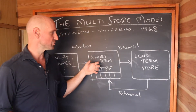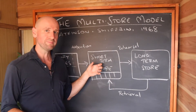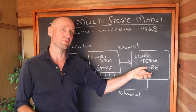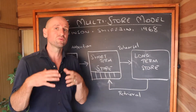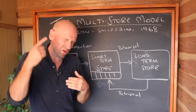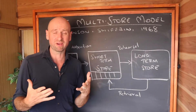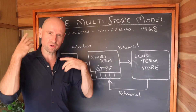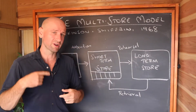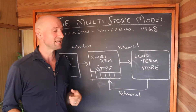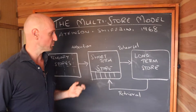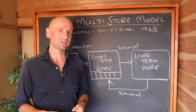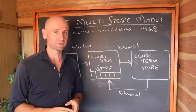Information in your short-term memory can be transferred to your long-term memory if you rehearse it — if you go over it, if you think about it enough. So rehearsal, repeating something in your mind and going over it again and again, according to this model, is going to transfer that memory to your long-term store.